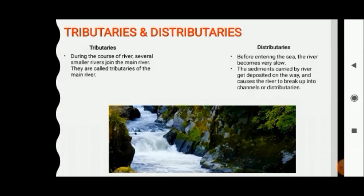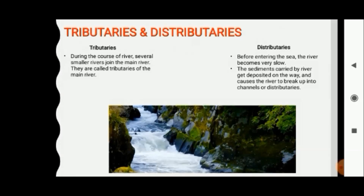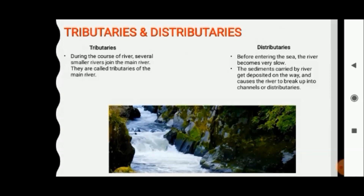What are distributaries? Before entering into the sea, rivers become very slow and get distributed into small rivers or streams. They get distributed due to the sediments carried by the river. The channels or small streams into which the river breaks up are known as distributaries of the main river.